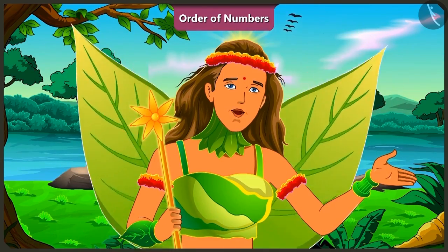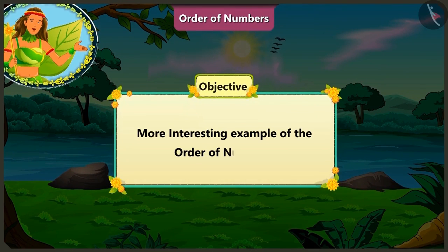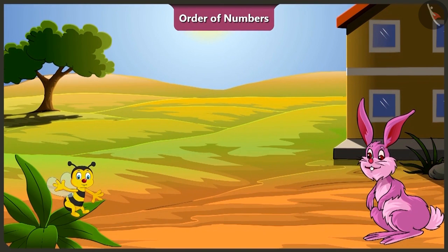Children, today let us look at some more interesting examples of the order of numbers. Now you have understood how to find the big number and the small number of two given numbers.